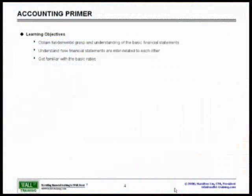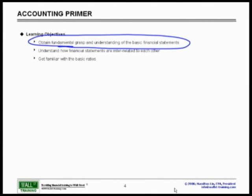We want to make sure that there are several learning objectives that you understand. The first learning objective is to make sure that you have a solid understanding and grasp of the financial statements and understanding of these basic core financials. We also want to make sure you understand how financial statements are integrated and interrelated to each other, and we want to become familiar with the basic ratios.